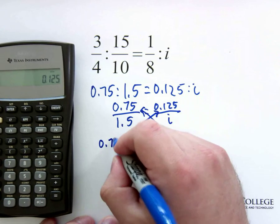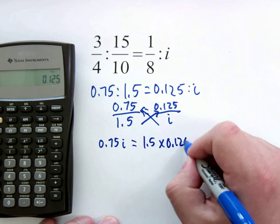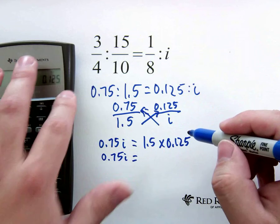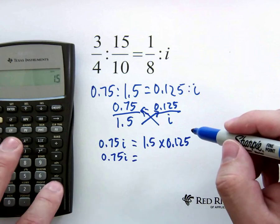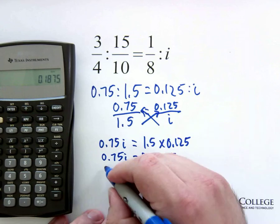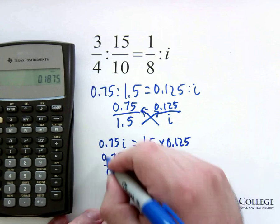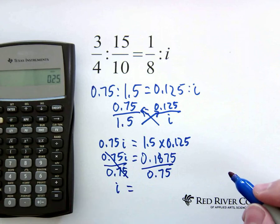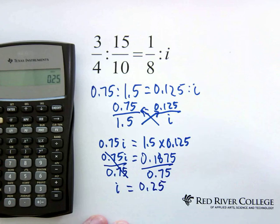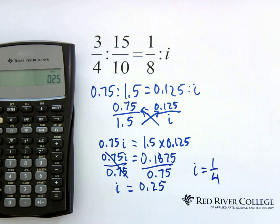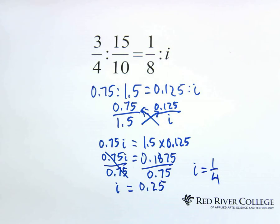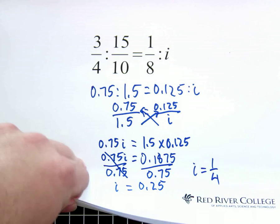So now we'll go ahead and multiply the 1.5 times the 0.125. We'll just multiply that by 1.5. And we get 0.1875, we'll now divide by 0.75. These will cancel out, leaving us with i. And then just take this answer and divide by 0.75. And we get 0.25. So 0.25, what would that be as a fraction? That would be 1.25. So 3.25 is equal to 1.8 to 1.25.